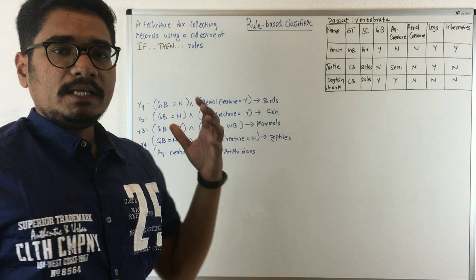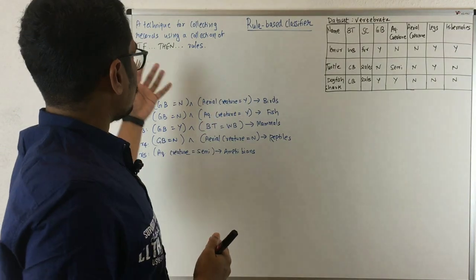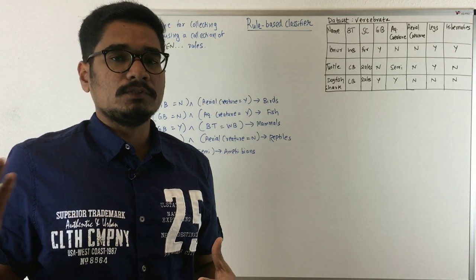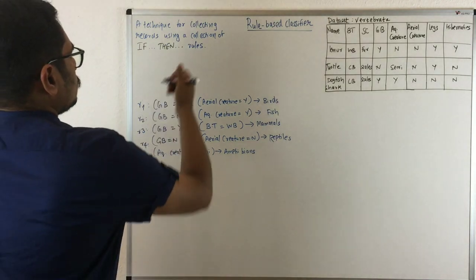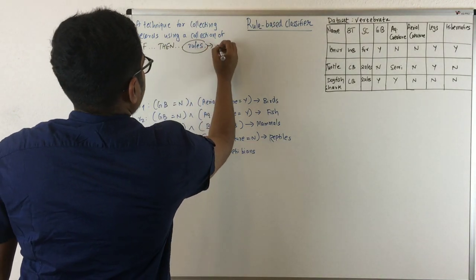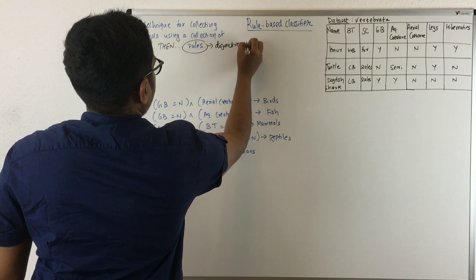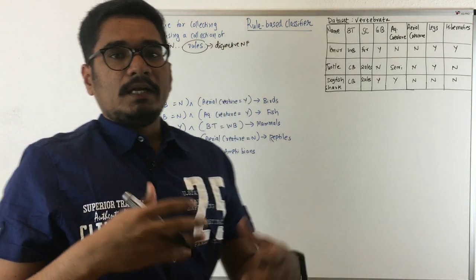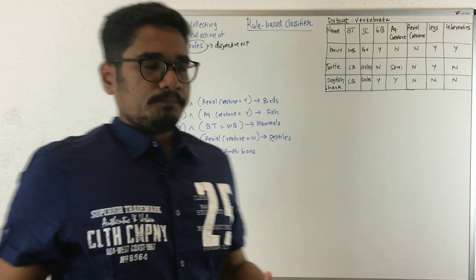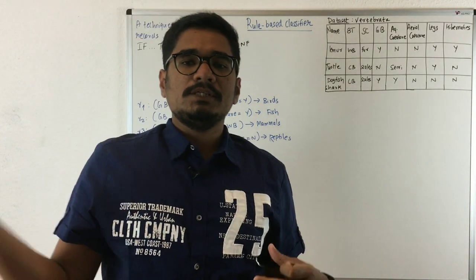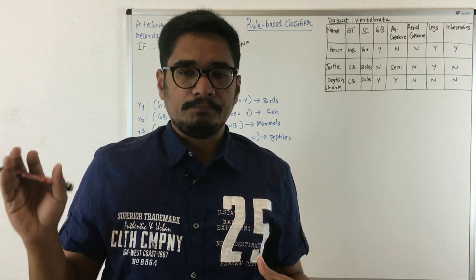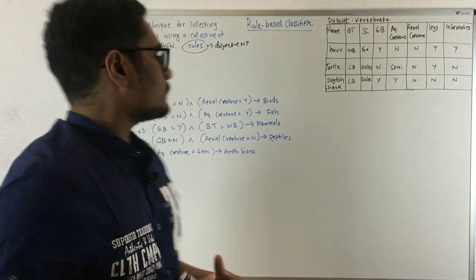It's basically a technique for classifying records using a bunch of if-else rules. These rules are essentially in disjunctive normal form, meaning they are connected with logical OR operators. If a condition is true, then that rule will trigger. Certain conditions are there in this.